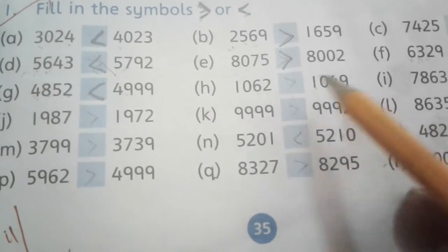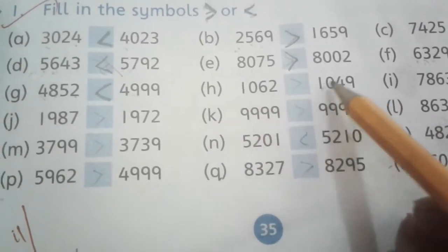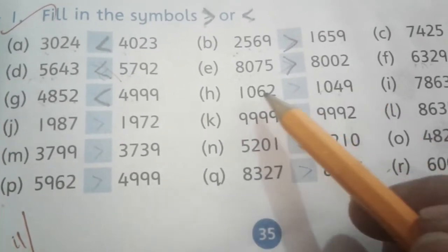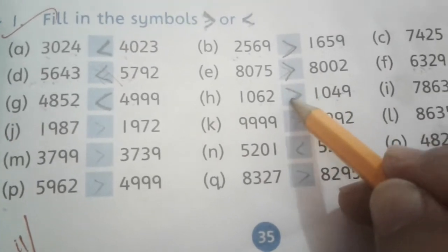1062 versus 1049. 1000 is the same, hundreds are not different on both sides. Here is 62 and here is 49, which means 62 is bigger than 49, so it's bigger than this.